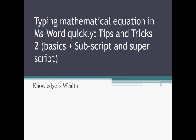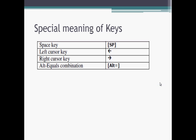Welcome to this video on typing mathematical equations in MS Word quickly. This is the second video covering some basics and shortcuts. There are four special keys to remember: first, the spacebar key (denoted as [sp]); second and third, the left and right cursor/arrow keys; and fourth, the Alt and Equal-to key combination. These four keys have special meaning when writing in an equation box.